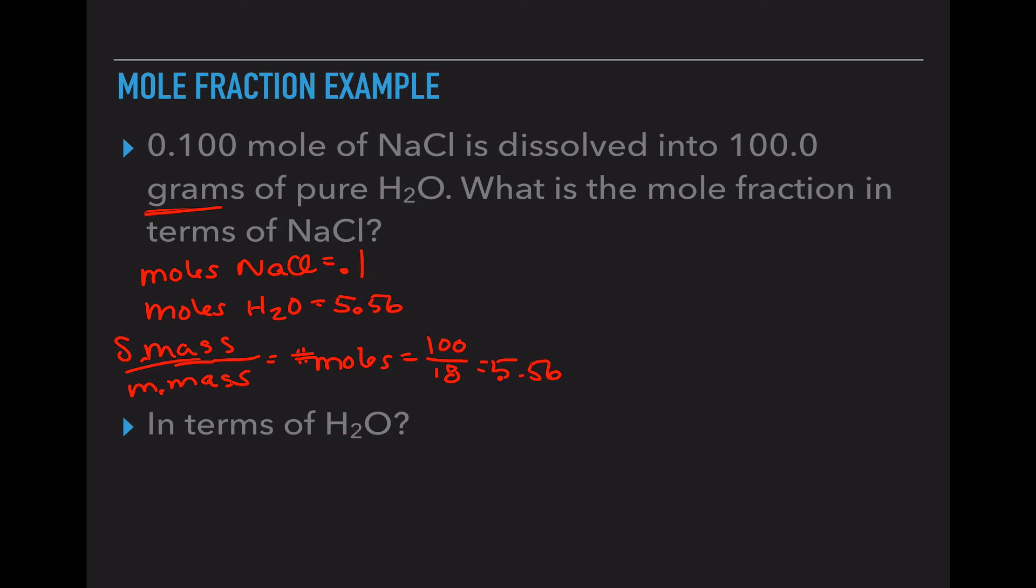So I have 0.1 moles of NaCl, 5.56 moles of water in that scenario. Now my equation is mole A or B over mole A plus B. Since this asks in terms of NaCl, on the top of that fraction bar I am going to put the number of moles of NaCl. On the bottom I have to take A and add it to B, so I am going to take this 0.1 and add it to the 5.56. Now I have to do this first. I cannot just divide out those 0.1's. I have 0.1 over 5.66, which is a mole fraction value of 0.018.